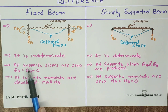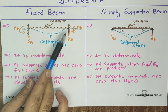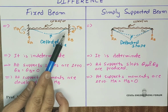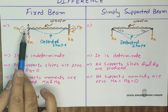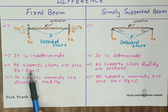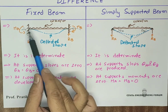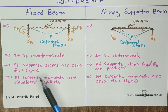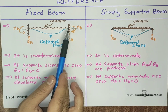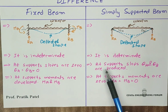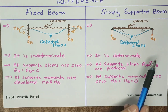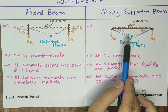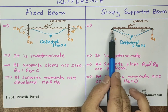The third difference: at supports, slopes are zero for the fixed beam — no angle is formed, theta equals zero, so slope is zero. For the simply supported beam, slopes theta A and theta B are produced at the supports, as you can see here.